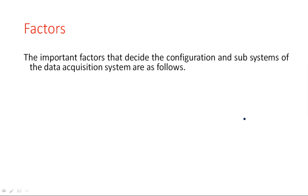The factors that have influence on this data acquisition system are the most important factors that decide the configuration and subsystem of a data acquisition system. The first factors are accuracy and resolution. Accuracy is the degree of exactness or closeness of a measured quantity with the absolute or required quantity. Resolution is the smallest change we can detect.